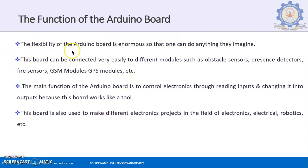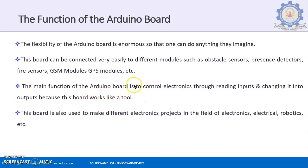The flexibility of the Arduino board is enormous — with the right sensor and the will to build, you can do almost anything. This board can be connected easily to different modules such as obstacle sensors, presence detectors, fire sensors, GSM modules, and GPS modules. The main function of the Arduino board is to control electronics by reading inputs from sensors and converting them to outputs. It is a tool that needs to be connected to an output interface device to display visible results.